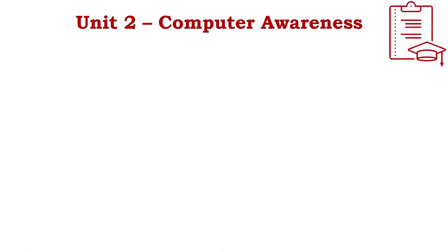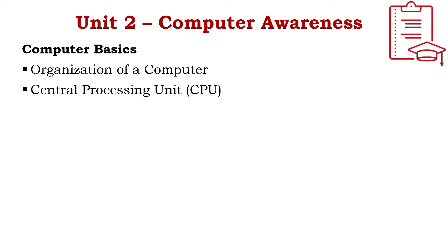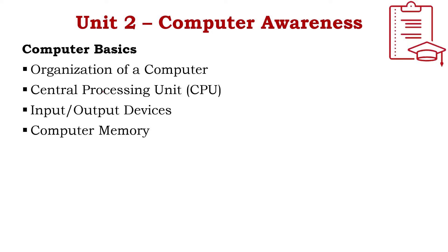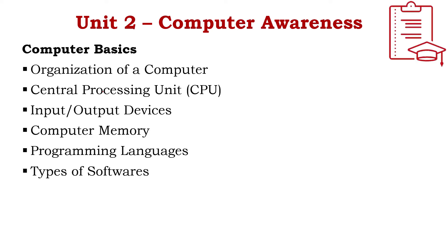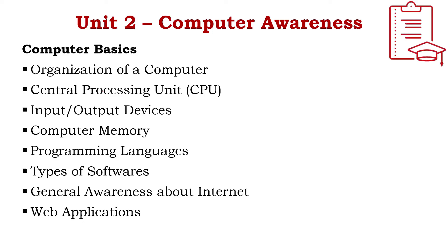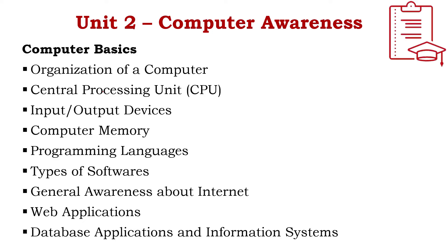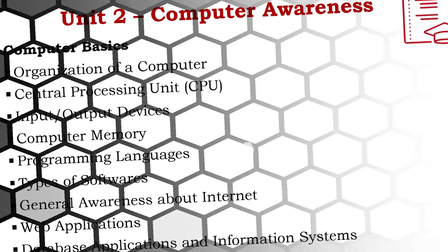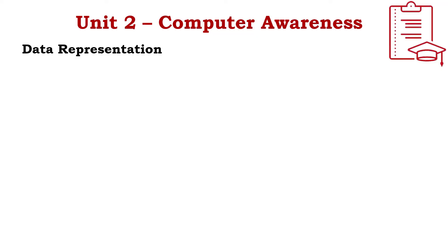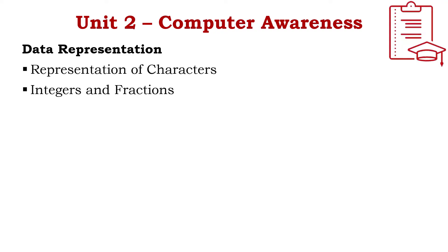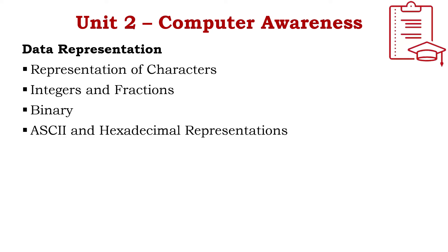Unit 2 is Computer Awareness, with four main concepts. The first is Computer Basics: organization of a computer, CPU, input/output devices, computer memory, programming languages, types of software, general awareness about the internet, web applications, database applications, and information systems. The second concept is Data Representation, covering representation of characters, integers and fractions, and binary, ASCII, and hexadecimal representations.